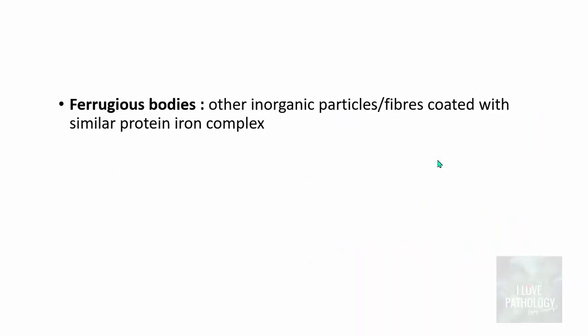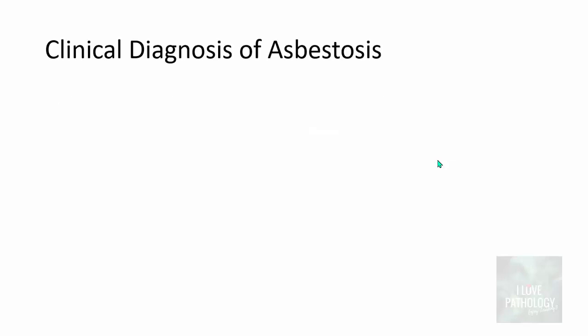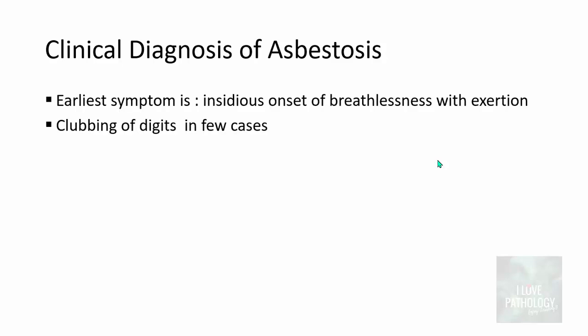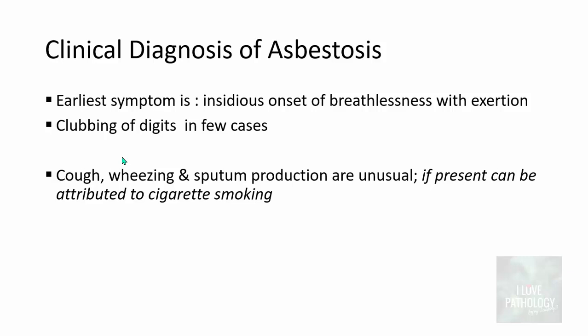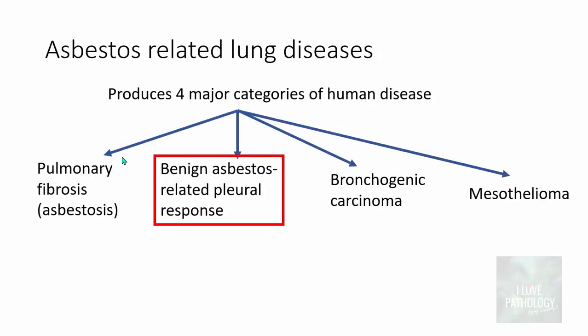In contrast, ferruginous bodies are other inorganic particles or fibers coated with a similar protein-iron complex. If the fiber is asbestos, it is an asbestos body; if the fiber is something else, it is a ferruginous body. Clinically, asbestosis presents with an insidious onset of breathlessness, initially on exertion and later at rest. Sometimes clubbing of digits is found. Cough, wheezing, and sputum production are not common in asbestosis and if present could be attributed to cigarette smoking.